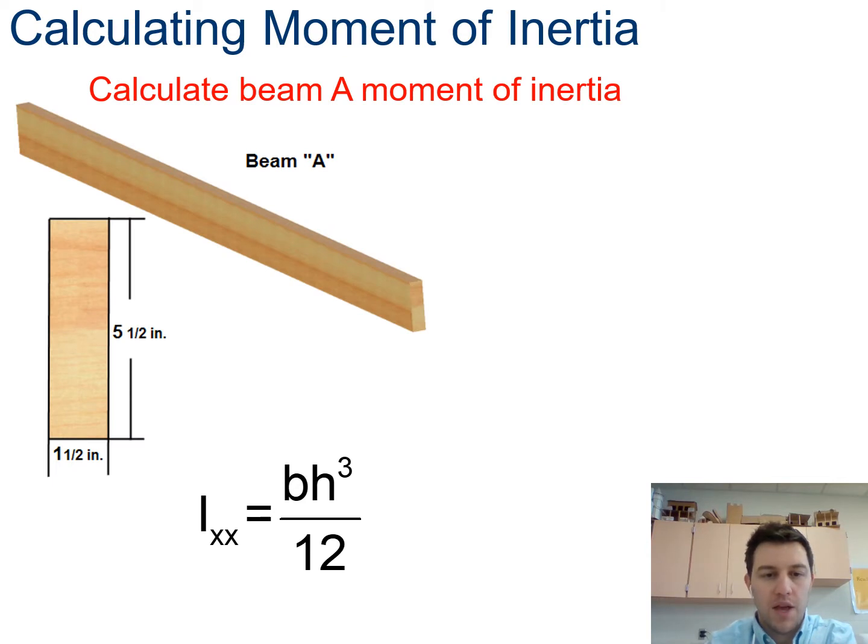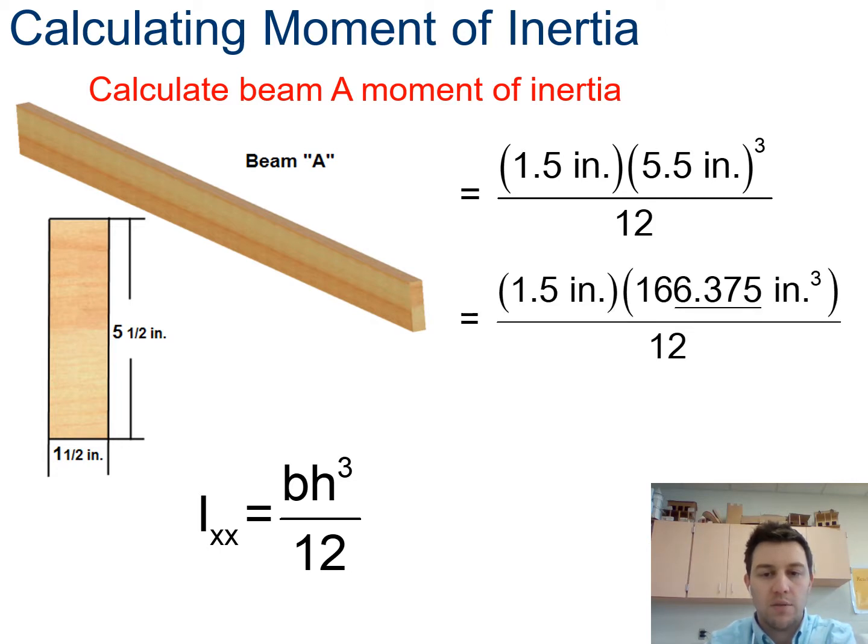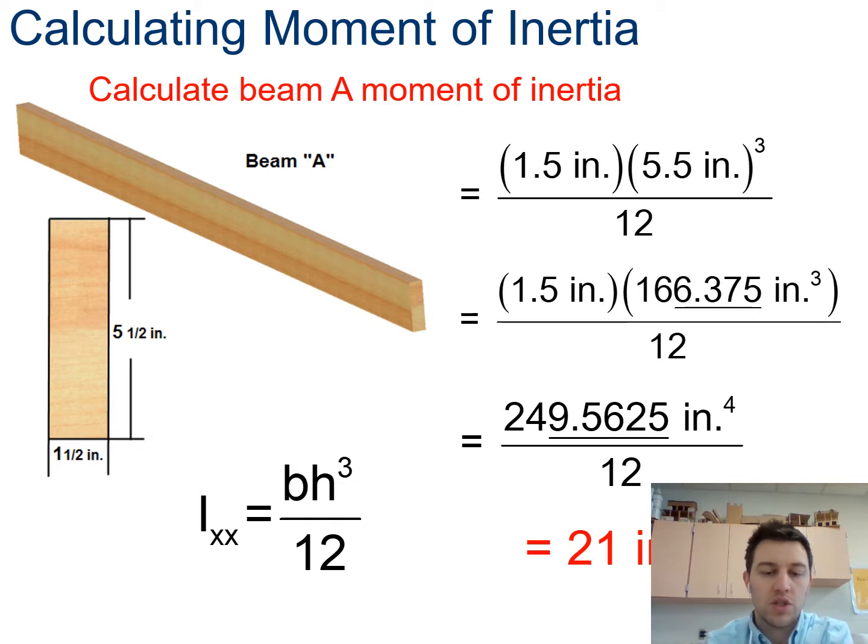So if I look at beam A where it's vertical, my base is one and a half, my height is five and a half. So 5.5 cubed times 1.5, all that divided by 12, gives me a moment of inertia of 21 inches to the fourth.